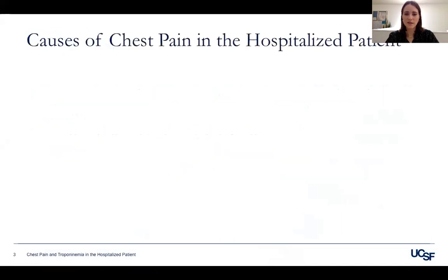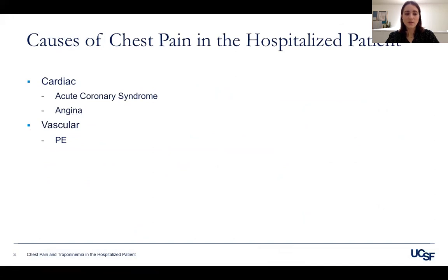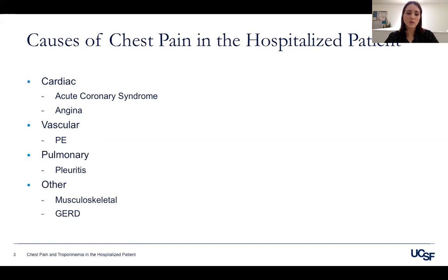Starting off with common causes of chest pain among hospitalized patients: the first system many of us jump to is the cardiac system — we want to rule out acute coronary syndrome, which can be life-threatening. Patients with pre-existing angina can have their anginal symptoms while in the hospital as well. PE should always be on the top of your list in hypercoagulable patients, but really any hospitalized patient is probably immobile, so PE is a possibility. There's a wide variety of things that can cause pleuritic chest pain, such as a pulmonary infection irritating the pleura. You can also consider benign causes like musculoskeletal causes and GERD, once you rule out anything life-threatening.